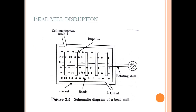Coming to the bead mill disruption technique, let me show you a horizontal type of bead mill. This is the horizontal bead mill system. In its construction, you have a horizontal system with impeller blades and a rotating shaft. The impeller continuously rotates, helping mix the beads with the cells. Cell suspension is sent in from the inlet, and there is a jacketed system which helps in maintaining temperature — to cool down the system due to heat generated inside.